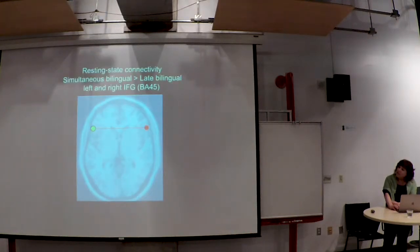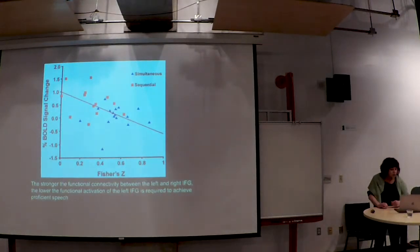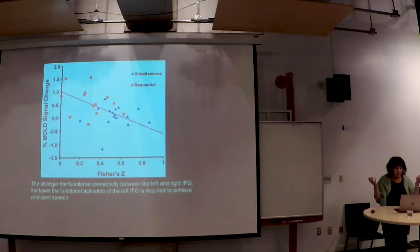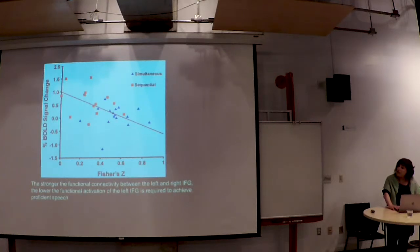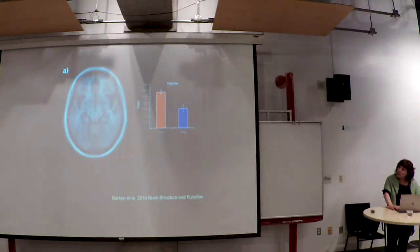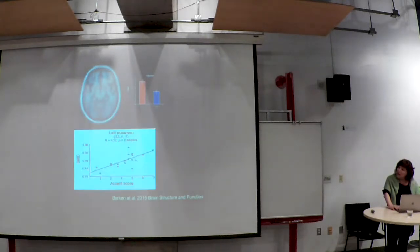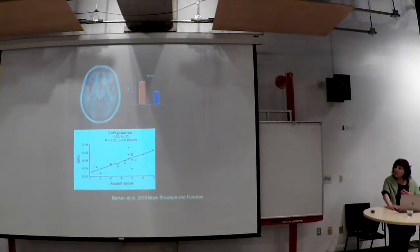Since then, a resting state connectivity study showed that simultaneous bilinguals have greater interhemispheric connectivity between the two frontal lobe regions. The stronger the functional connectivity between the left and right regions, the lower the activation of the frontal gyrus required to achieve proficient speech. We've also found that simultaneous bilinguals have thicker gray matter density in the basal ganglia — important for speech articulation — than sequential bilinguals.